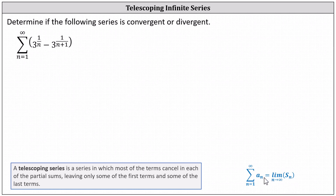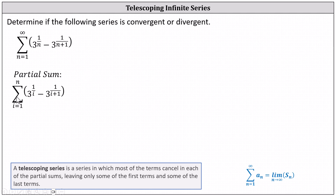To work on determining a formula for the partial sum in terms of n, we will rewrite the infinite series, changing the variable to i and then let n be the upper limit of the index. So for the partial sums, we have the sum from i equals 1 to n of the same formula for a sub n, now just a sub i.